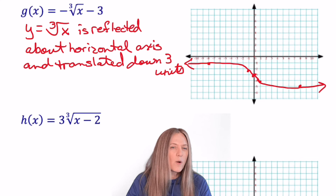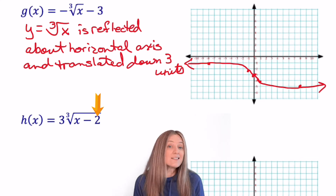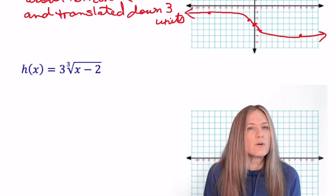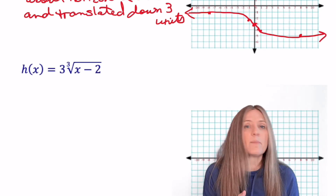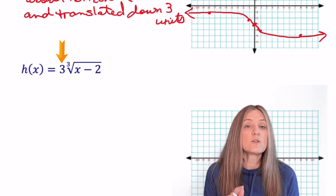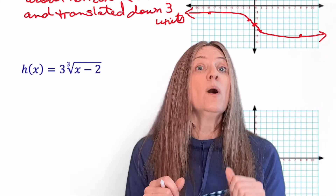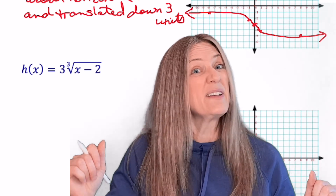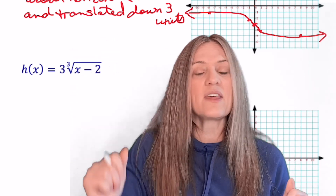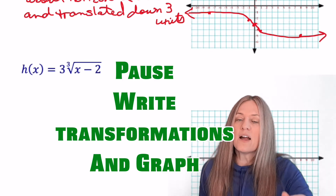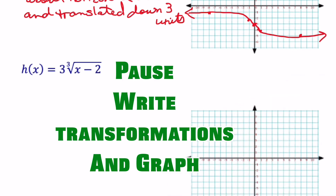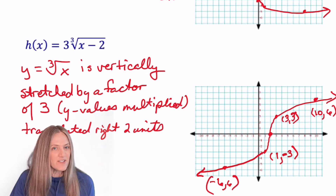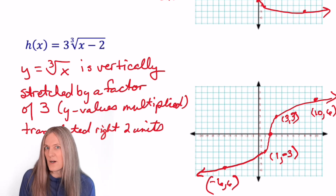The last example has a vertical stretch by a factor of 3 and a translation to the right by 2 units. With a vertical stretch of 3, the y-values are multiplied by 3: when you'd normally go up or down by 1, go 3 instead; when you'd go up or down by 2, go 6. Write your transformations, plot your points, sketch it, and come back to check your answer. Check that you got that vertical stretch correct — the points are provided so you can verify your work.